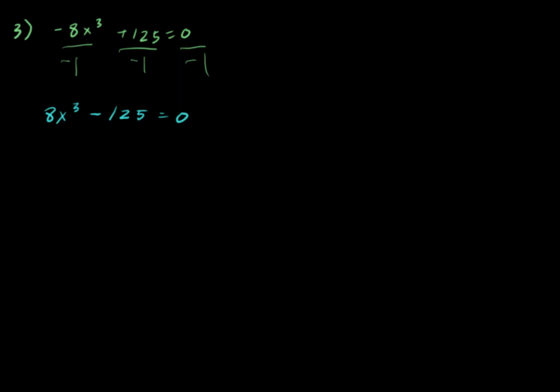A difference of cubes, A cubed minus B cubed equals A minus B times A squared plus AB plus B squared. It factors into this formula right here.